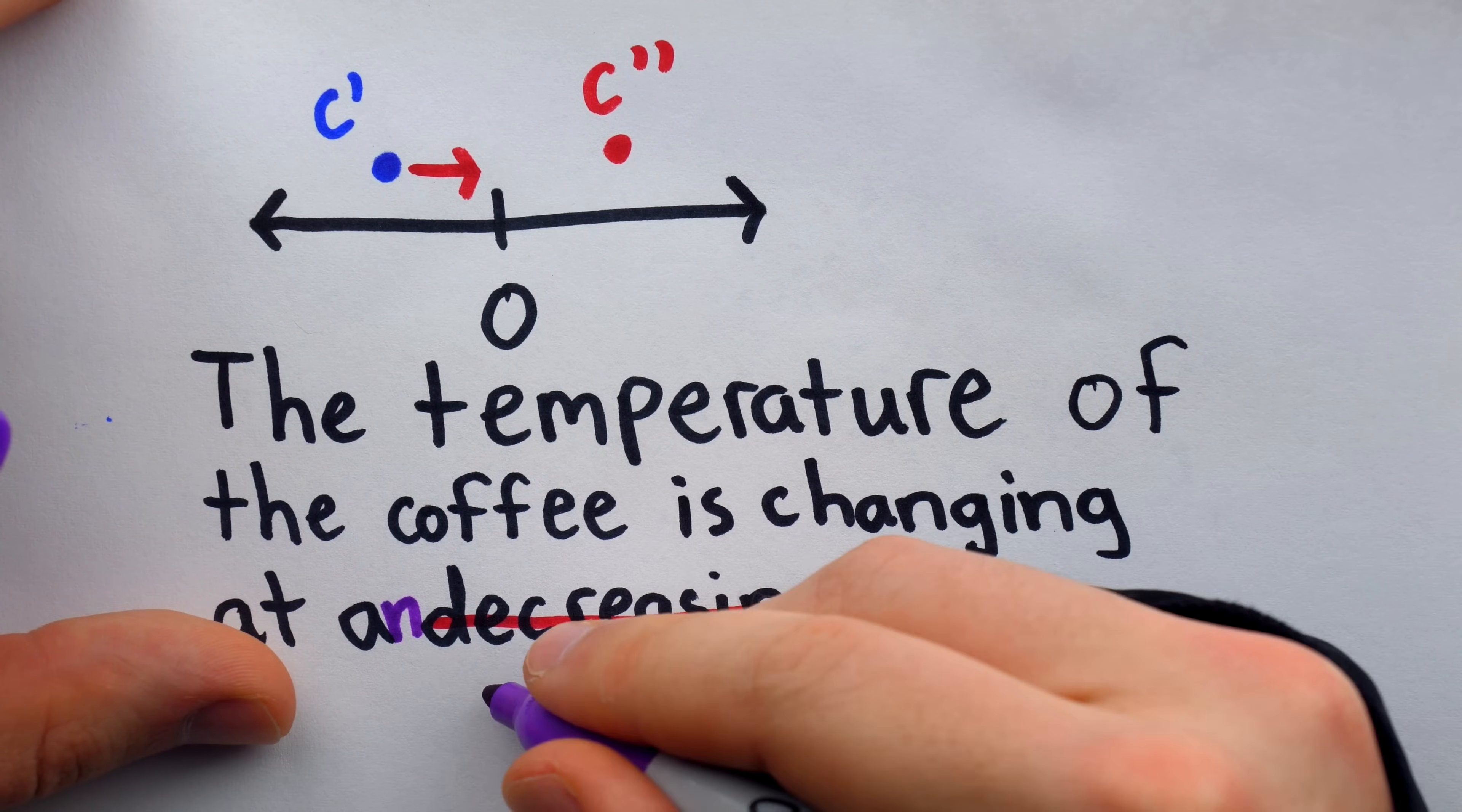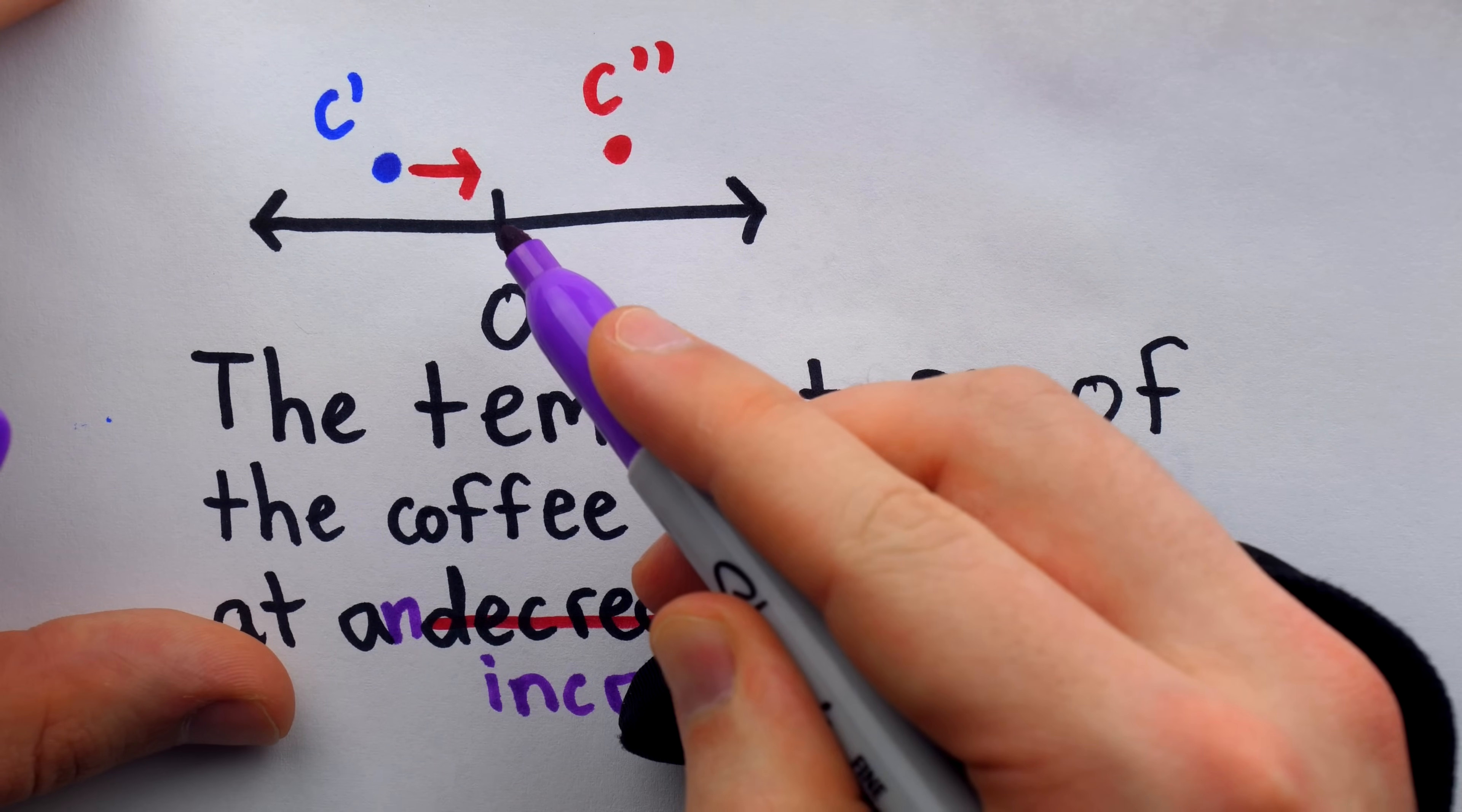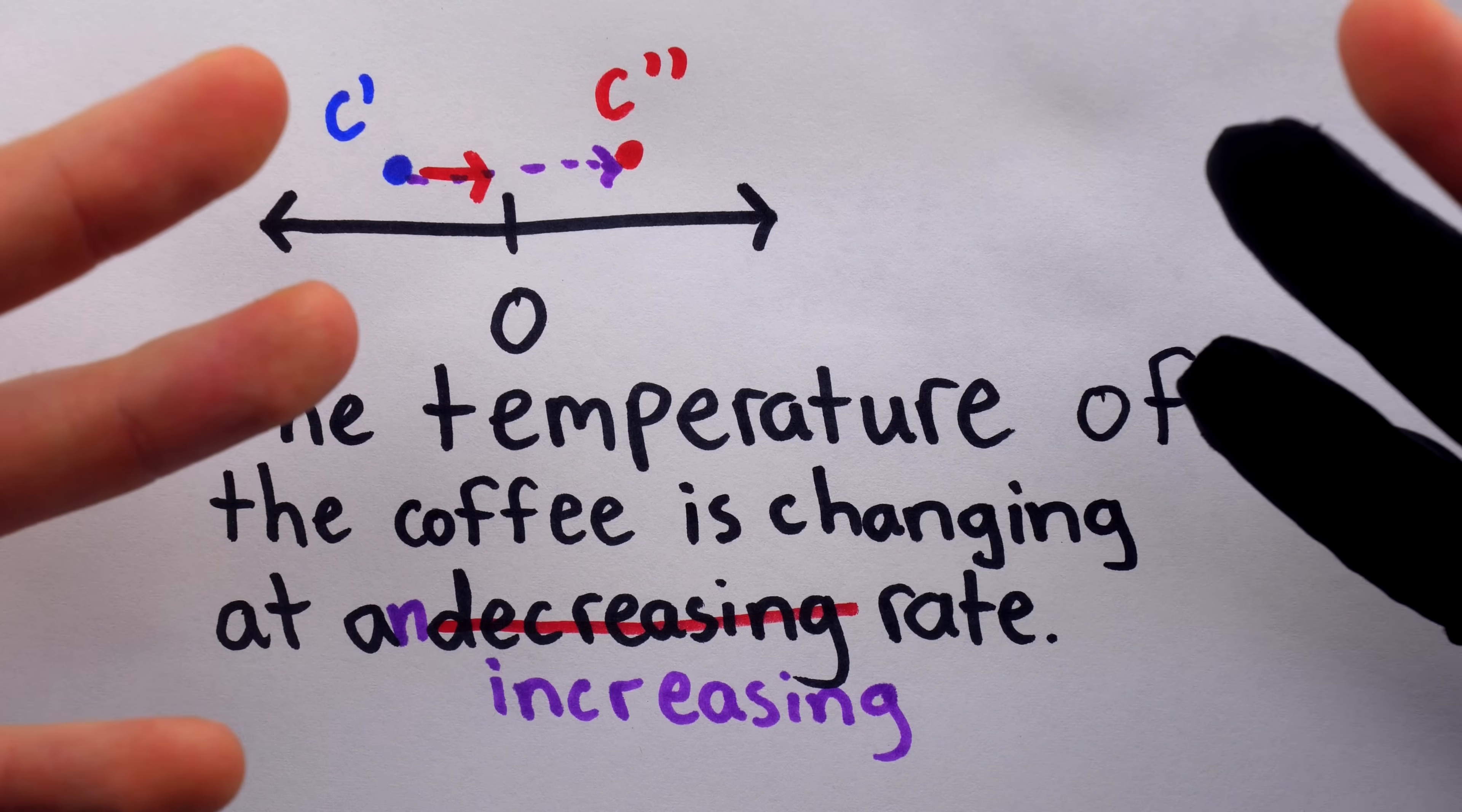It's true, of course, that C prime is getting closer to zero. Its magnitude is actually decreasing because it's negative and approaching zero. But the number itself, C prime is increasing. It's moving to the right of the number line. That means it's going up.